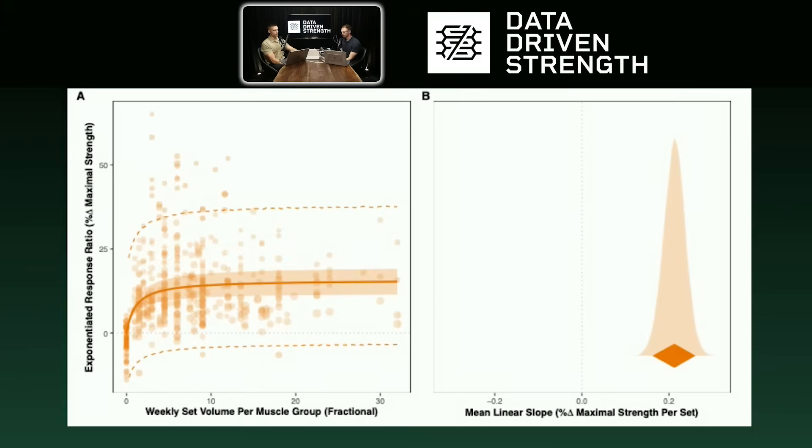All right, so with that, let's get into the primary results from the paper in terms of the dose-response between volume and strength gain. So again, refer back to season two, episode one for more details on the various models, the various candidate models. I think there were seven candidate models.